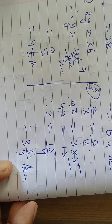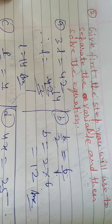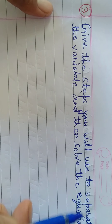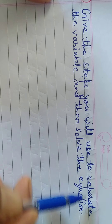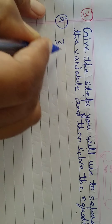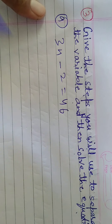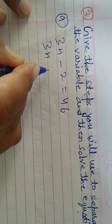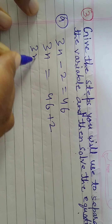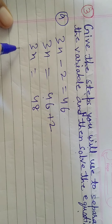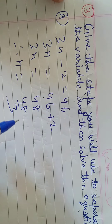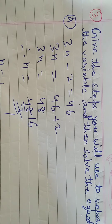Some questions I am leaving for you. Question number 2 is completed. Now come to question number 3: give the steps you will use to separate the variable and solve the equation. Part A: 3n minus 2 equals 46. Send minus 2 to the right side: 3n equals 46 plus 2, which is 48. Then n equals 48 by 3. Cancel: 3 sixteens are 48, so n equals 16.